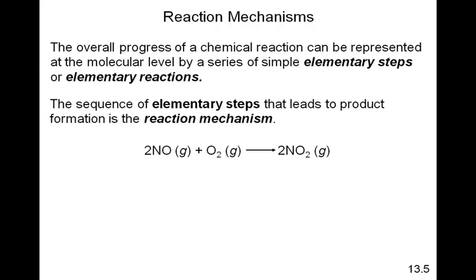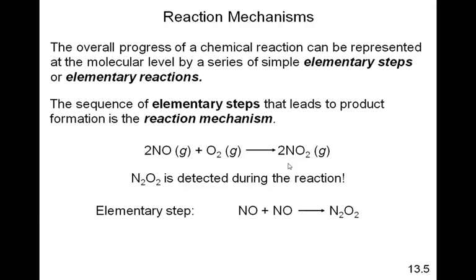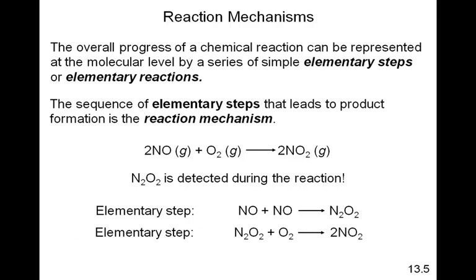Here's a reaction: 2NO plus O₂ reacts to form 2NO₂. N₂O₂ is detected during the reaction. So how is N₂O₂ detected during the process if we have a reaction in which NO is reacting with O₂ to form NO₂? It is thought that the reaction takes place in two steps. First, two NO molecules react with each other in the first elementary step to form N₂O₂, which can be detected during the process. Then in a second elementary step, the N₂O₂ that is formed reacts with the oxygen to form NO₂.